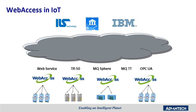Google Map integration is a new feature of Web Access. In some applications, geographical representation of data is necessary. For example, in real estate management, each building's operating data can be navigated through a Google Map. Real-time data and alarms can also be displayed with a marker on the map. In oil drilling applications, each well can also be properly identified on the map with current working information.